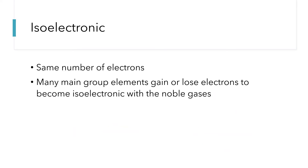Isoelectronic simply means that the species have the same number of electrons. Most of the time, main group elements will either gain or lose electrons to become isoelectronic with the noble gases. All four of the ions we just looked at — oxygen, fluorine, sodium, and aluminum — are all isoelectronic with the noble gas neon.